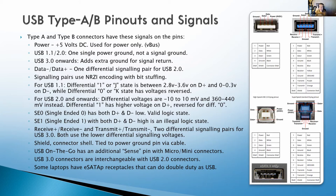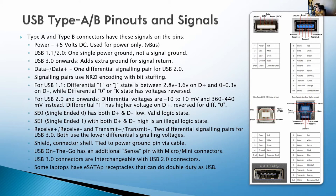With USB 3.0 they introduced additional differential pairs: a receive differential pair and a transmit differential pair, in addition to the original differential pair from the older specification. For a lot of USB cables they tie the power ground pin to the shield, which is not against spec. With USB micro and mini connectors they added an extra pin called a sense pin, meant for USB On-The-Go, which I'll talk about later.